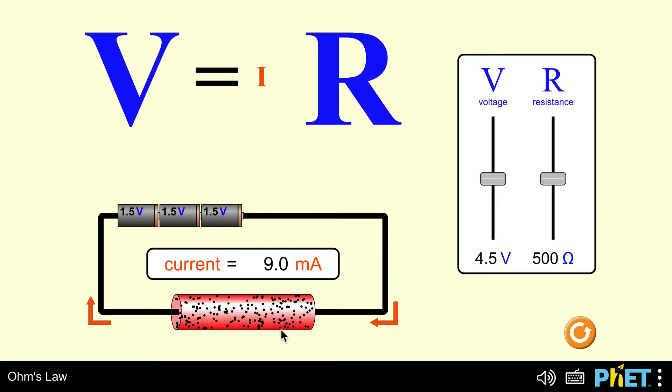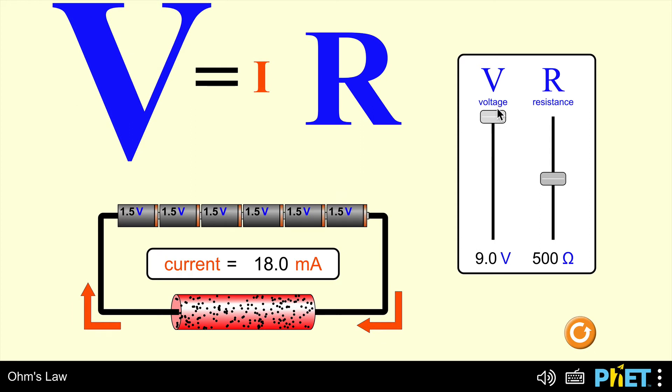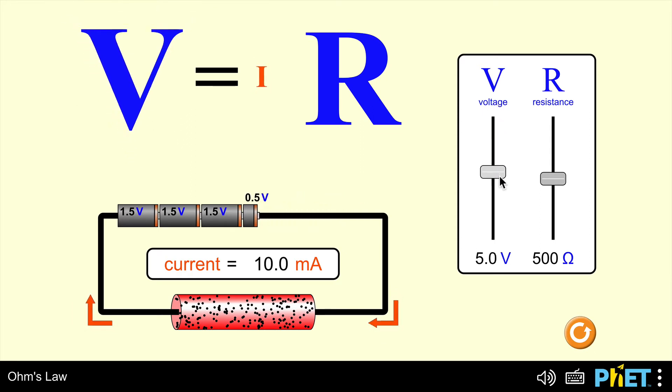I have a resistor here, that's this thing in red, which has a resistance of 500 ohms. So using Ohm's law, I equals V over R, it must work out that the current works out as 9 milliamps. When I increase the supply voltage, you can see the letter V is getting larger, and the letter I is getting larger as well.